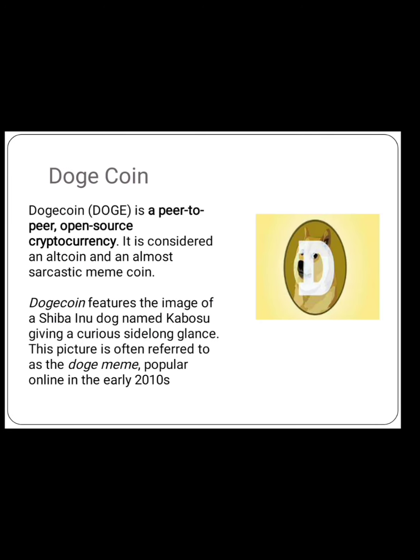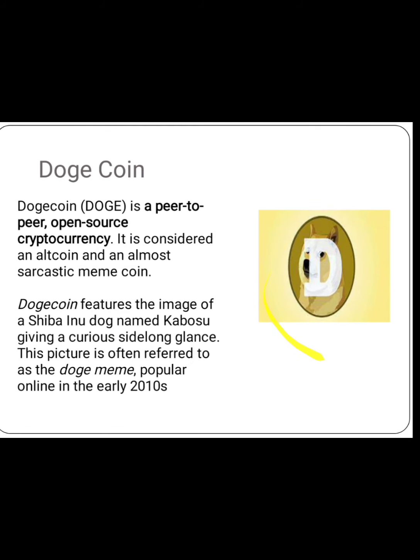Dogecoin is a peer-to-peer open source cryptocurrency. It is considered an altcoin and almost a sarcastic meme coin. It's called a sarcastic meme coin because you can see a picture of a dog in the cryptocurrency. This Dogecoin was named after the dog breed Shiba Inu from Japan, and this picture is often referred to the dog meme popular online in 2010. You still cannot hold Dogecoin because it is a form of digital cash that you can send to anybody.